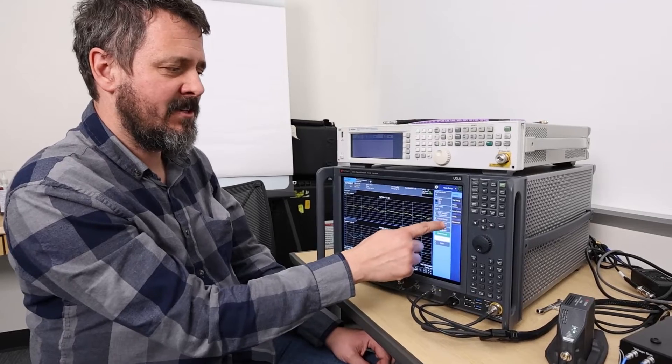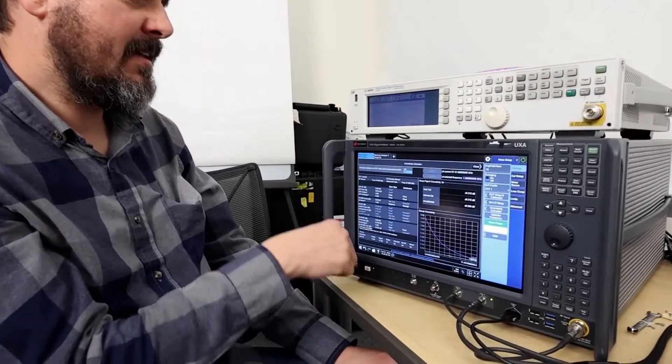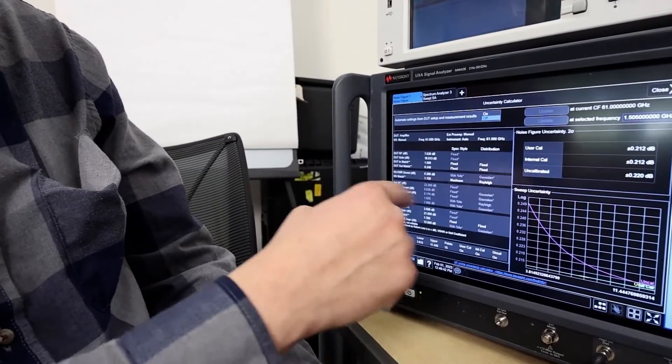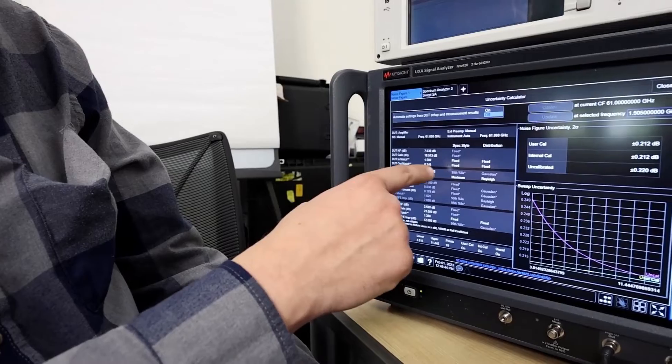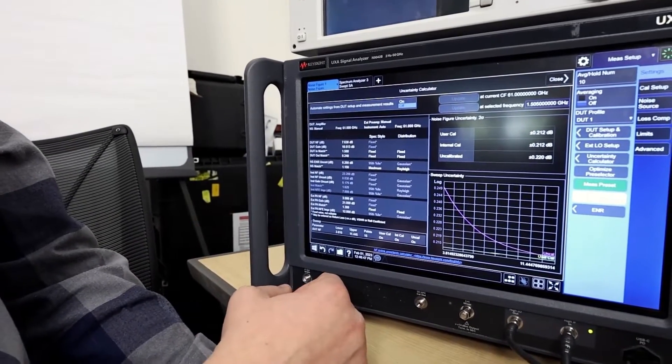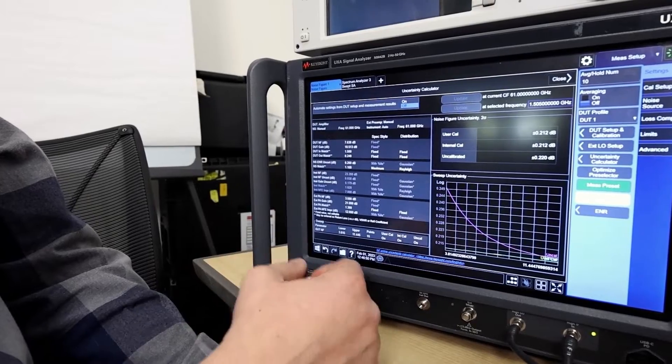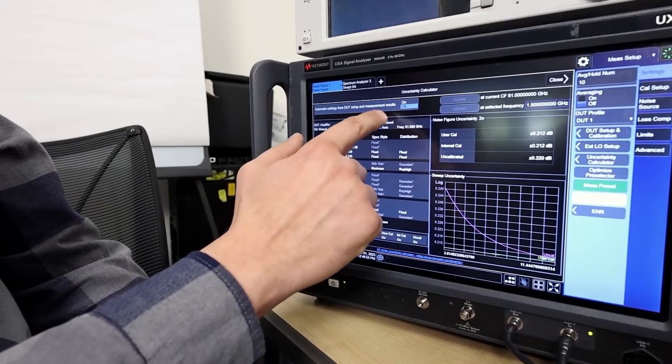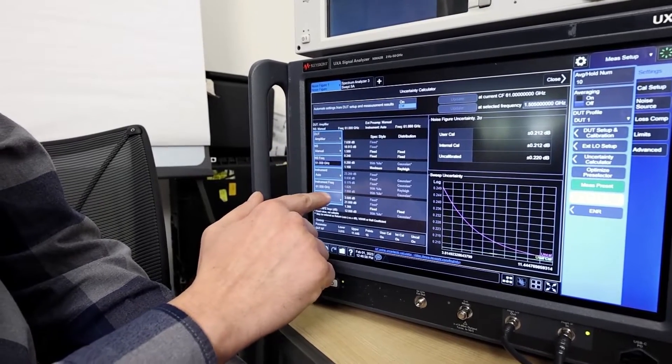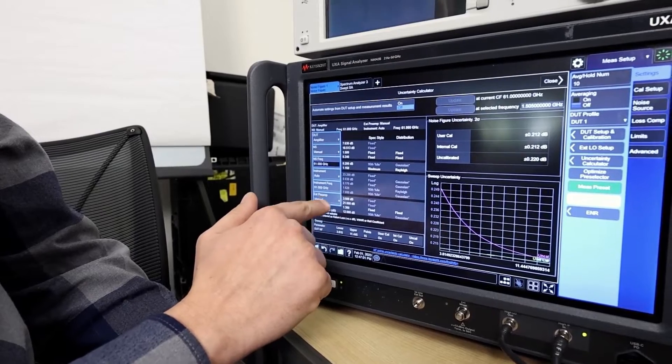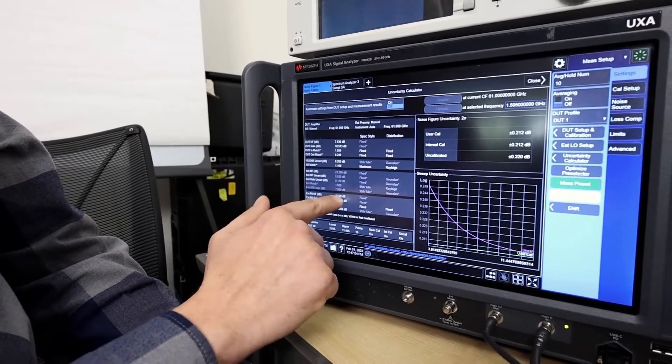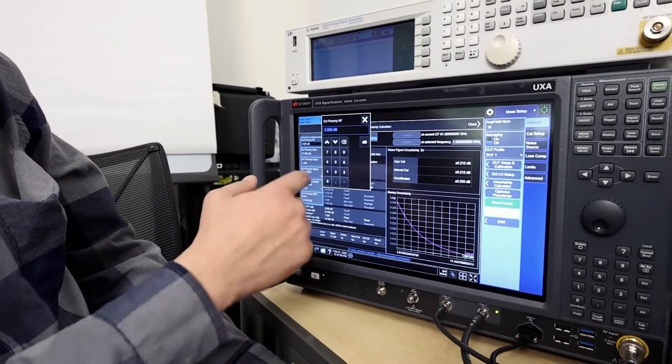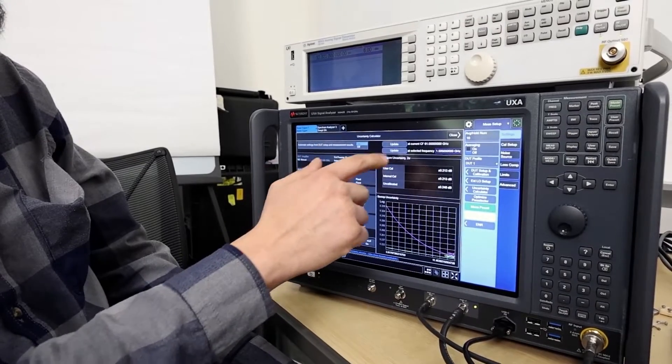One thing to point out is I can go into my uncertainty calculator and I can set up the calculator to see what my uncertainty is. A lot of the uncertainty is based on the uncertainty of the ENR values from the noise source, and Noisecom provides uncertainty values. But one thing is I need to add in my external amplifier, so my external preamp is the same as my DUT. After I do that, then I can automate my results and update them.